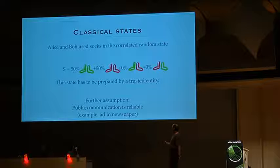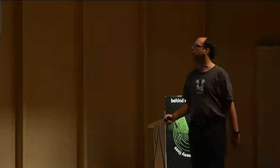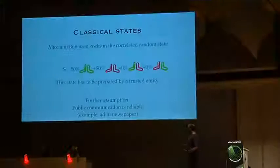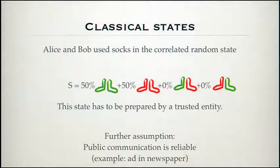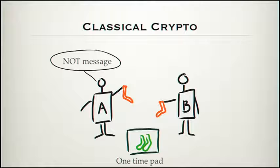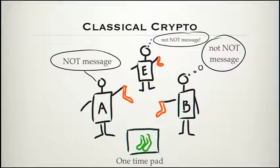The important thing here is also that this state has to be prepared by a trusted entity — either they do it themselves, or if they do the sock distribution by mail, they have to trust the mail system. If Eve is the mailman and looks into the envelope and sees the color of the sock, then they are lost. And there's a further assumption that will also exist in the quantum case: that public communication is reliable. Alice has to announce 'not message' and Bob has to be able to hear this message correctly. Otherwise it wouldn't work.